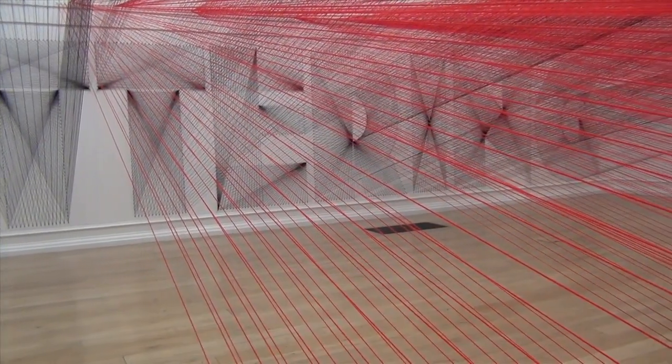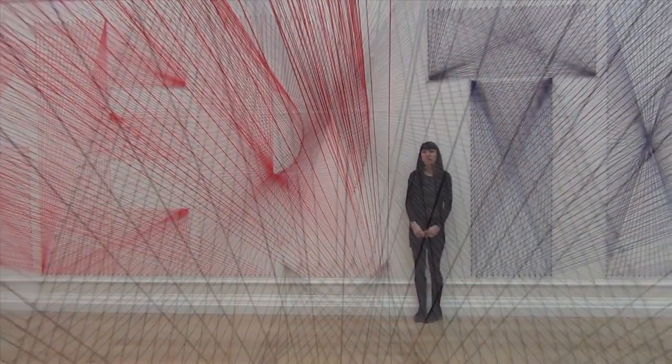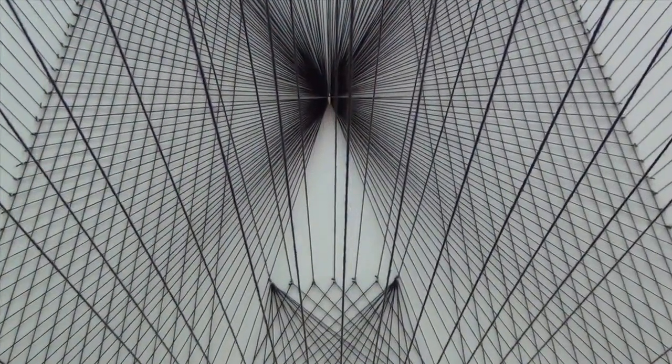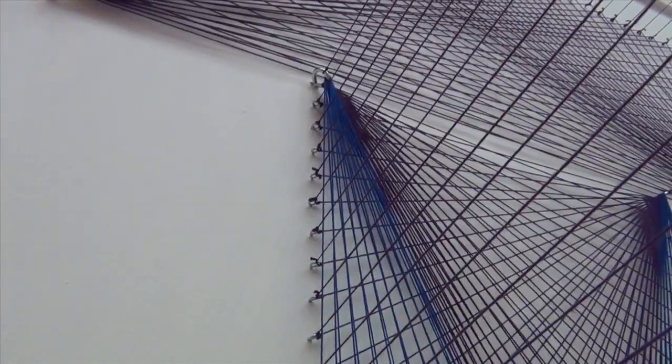Inspired by a recent bout of insomnia and the Black Sabbath album Master of Reality, which scared the young artist Pei White so much that she had to hide it under her bed in order to be able to sleep, black and purple thread span the lofty South London gallery like a loom.